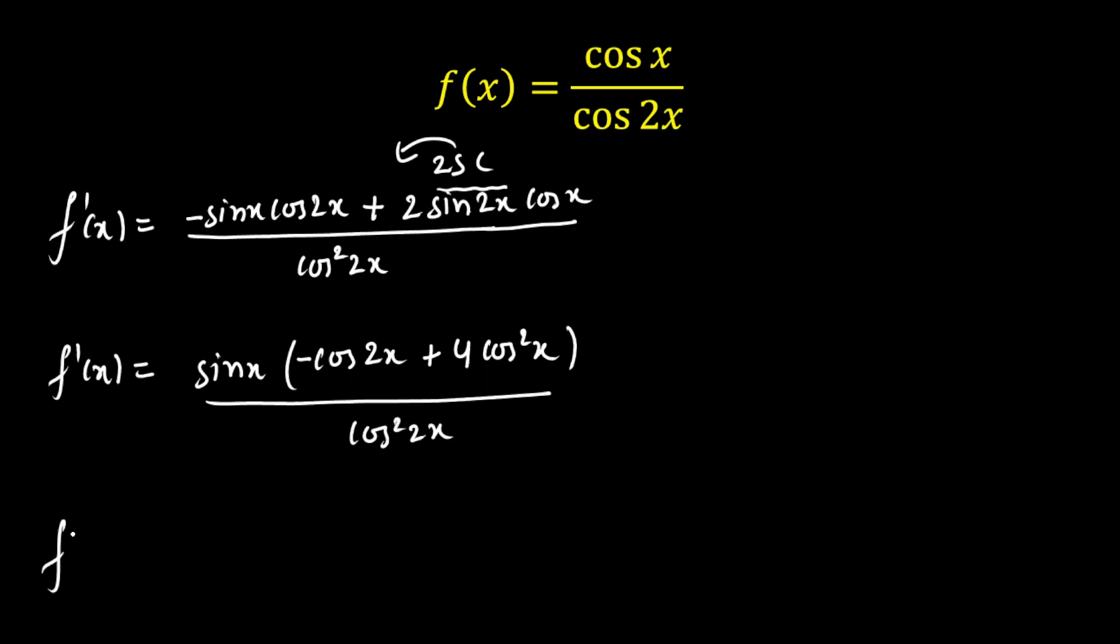Now, the final expression is f prime of x will be equal to sin x multiplied by, I am going to open this cos 2x as 2 cos squared x minus 1 with a negative sign. So this will be minus 2 cos squared x plus 4 cos squared x. That will be 2 cos squared x plus 1. As you can see, minus 1 plus 1, whole divided by cos squared 2x.